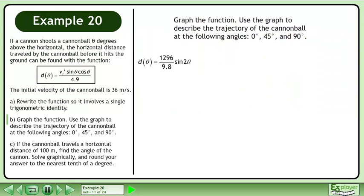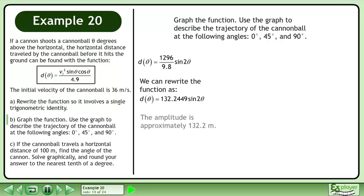Bring up the function we found in Part A. We can rewrite the function as d of theta equals 132.2449 sin 2 theta. The amplitude is approximately 132.2 meters. The period is 180 degrees.